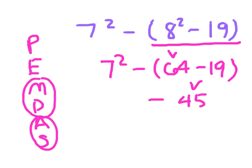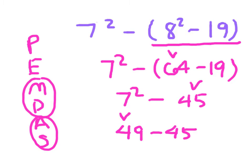Then we have 7 squared still minus 45. Looking from left to right, we still have to clear an exponent — we've finished clearing the parentheses. 7 squared evaluates to 49. Then we have 49 minus 45.